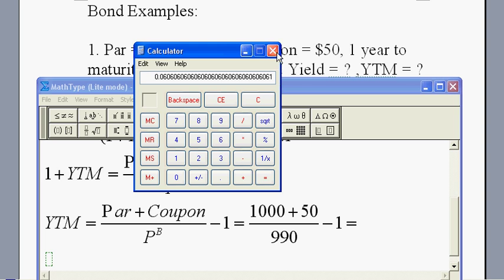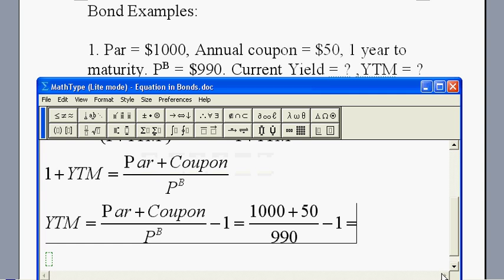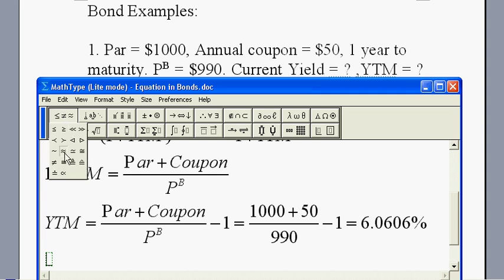So we got 6.060606. This number now looks like an interest rate. Now we know it's 6.0606%, and we can round this number up. It is about 6.061%.